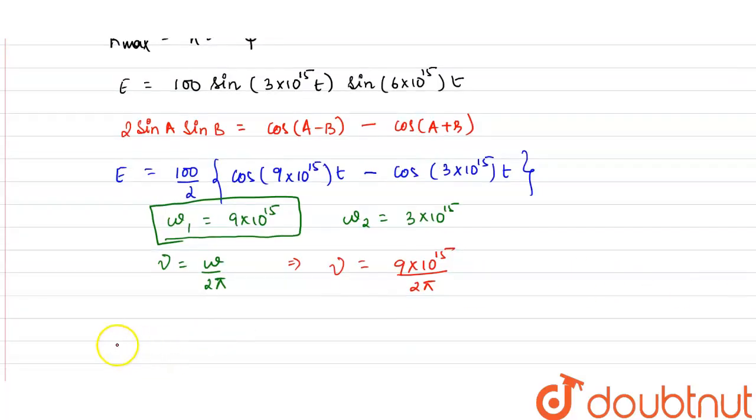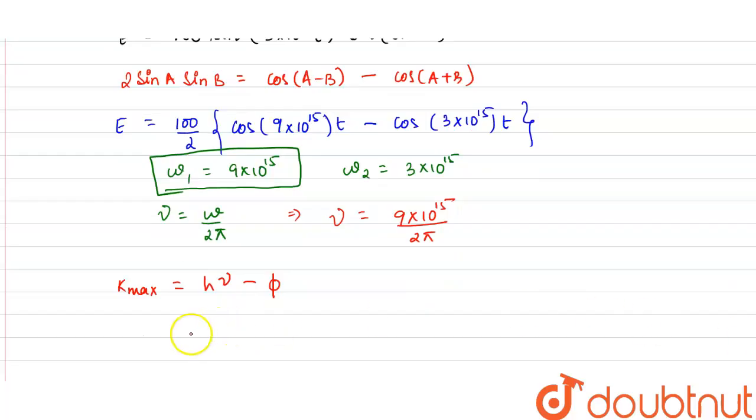Now substitute the frequency in the equation of the maximum kinetic energy, that is h nu minus phi. So the value of h is 6.63 into 10 raised by minus 34 joules second into the frequency is 9 into 10 raised by 15 divided by 2 pi per second,